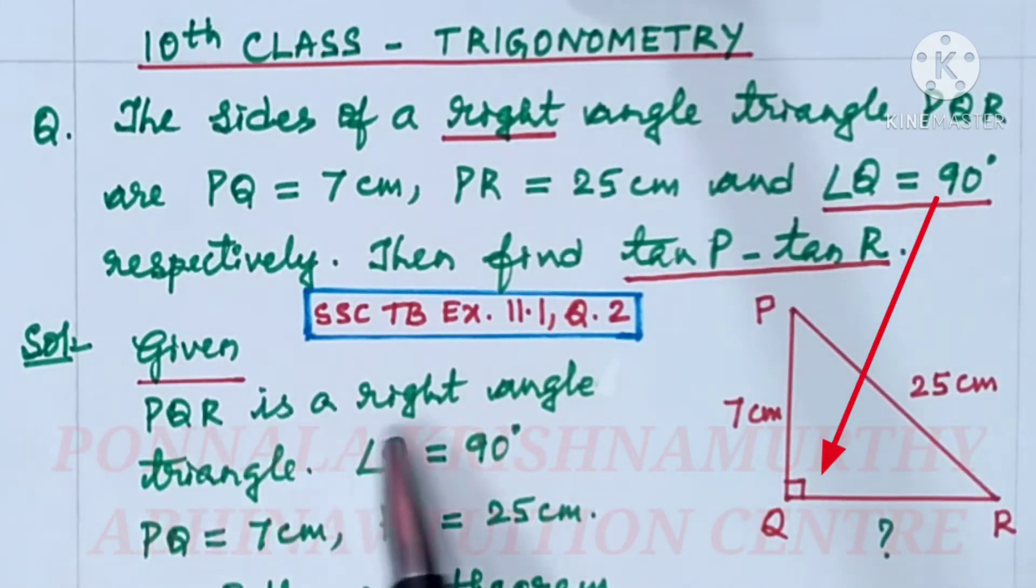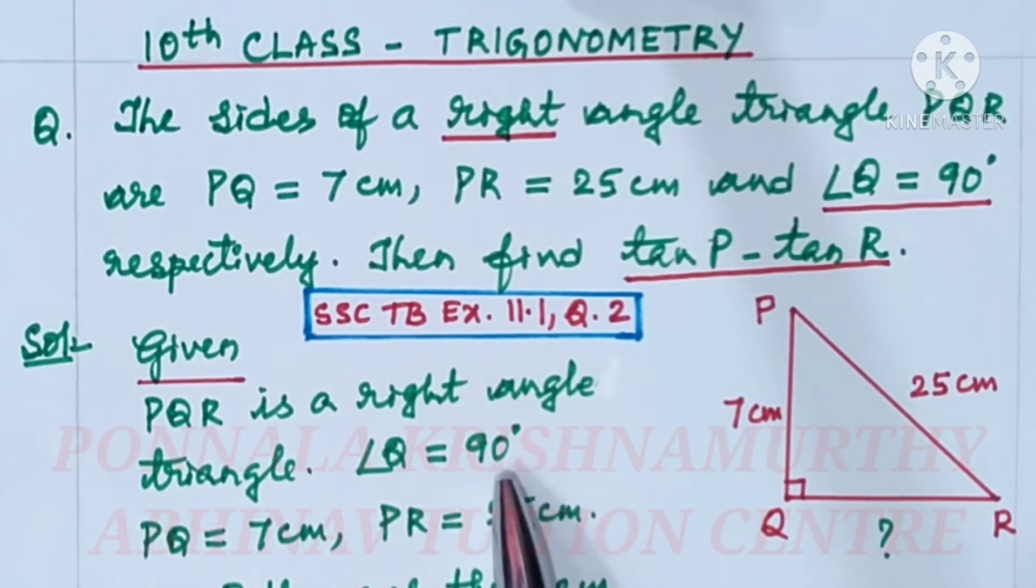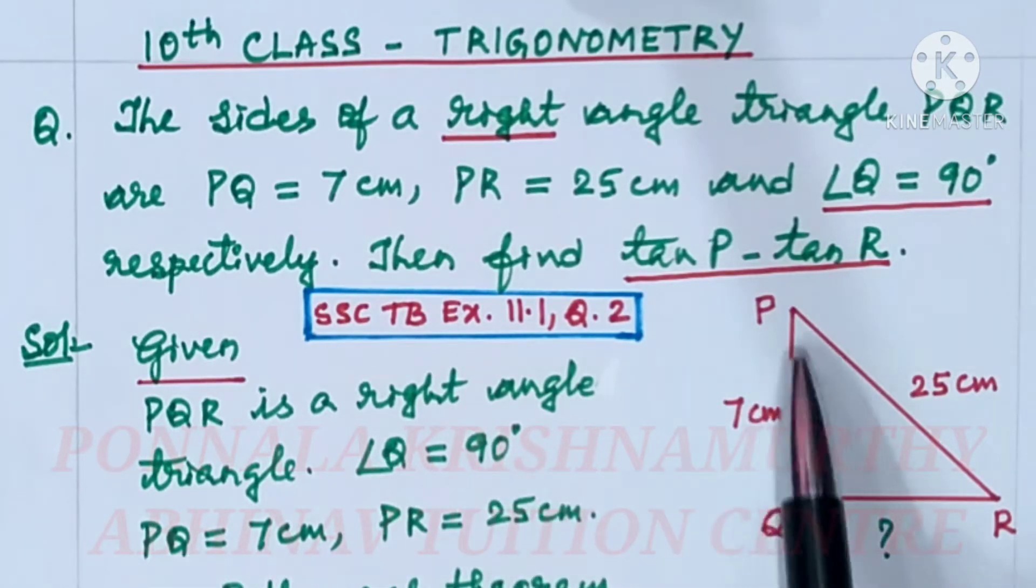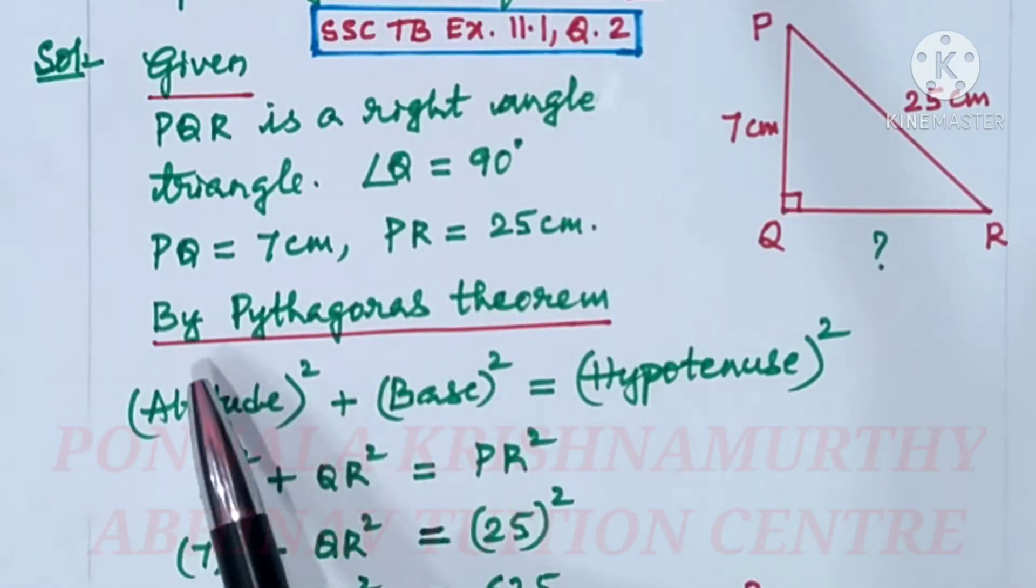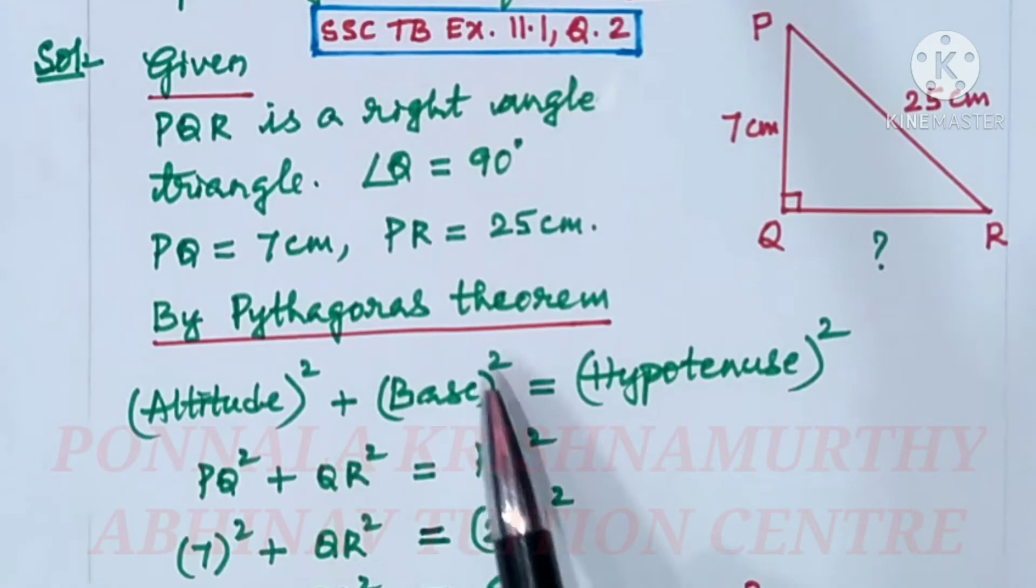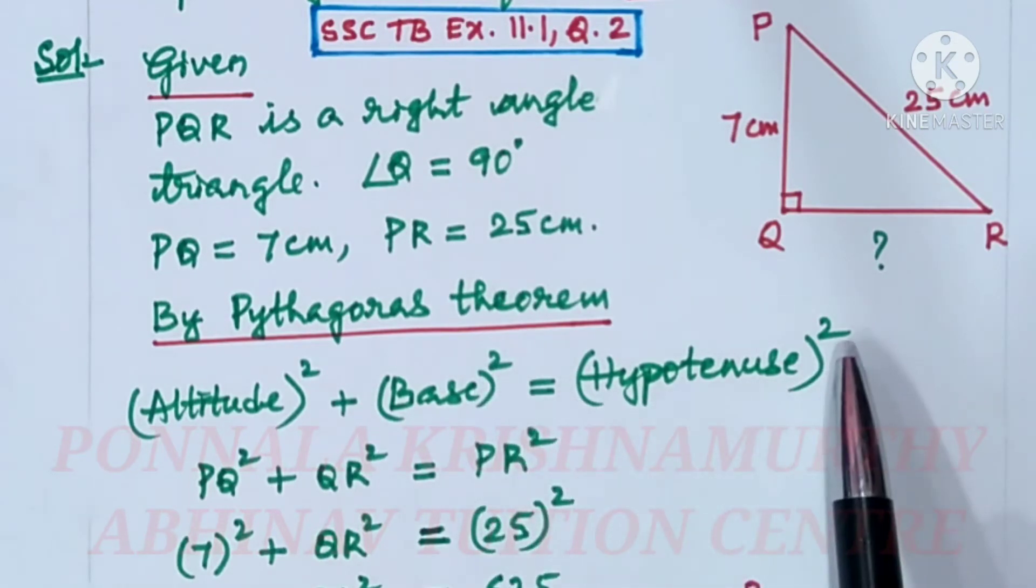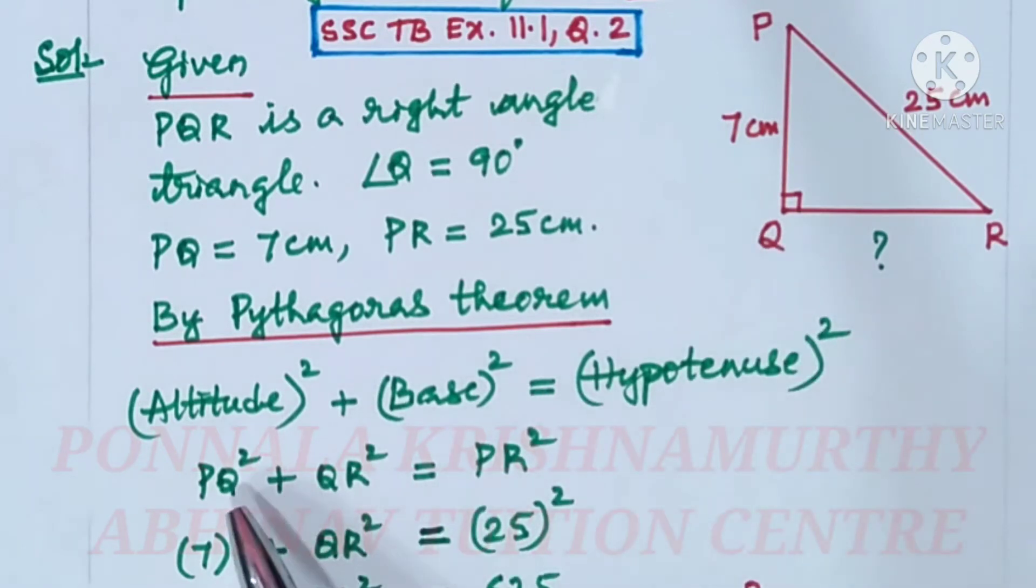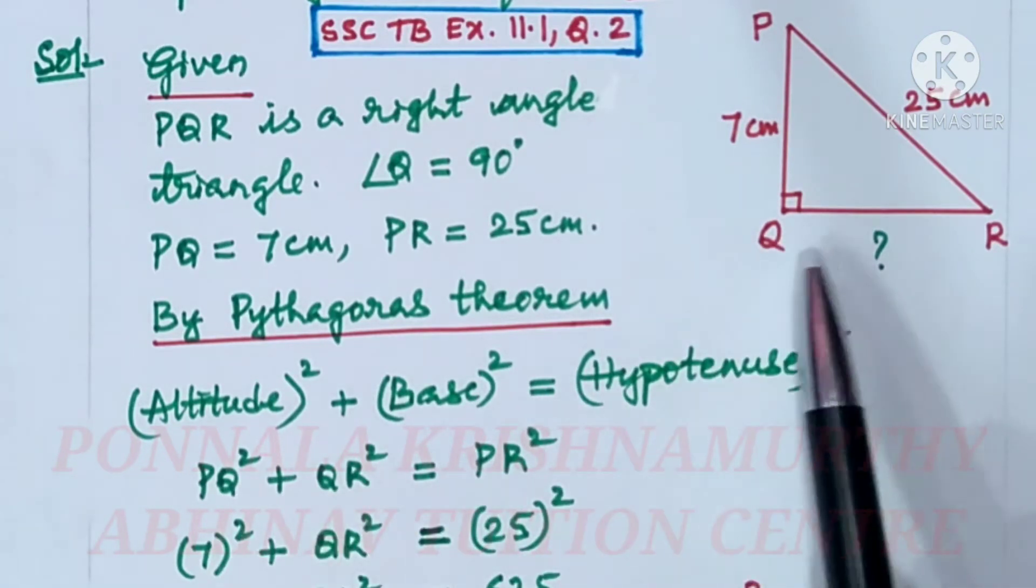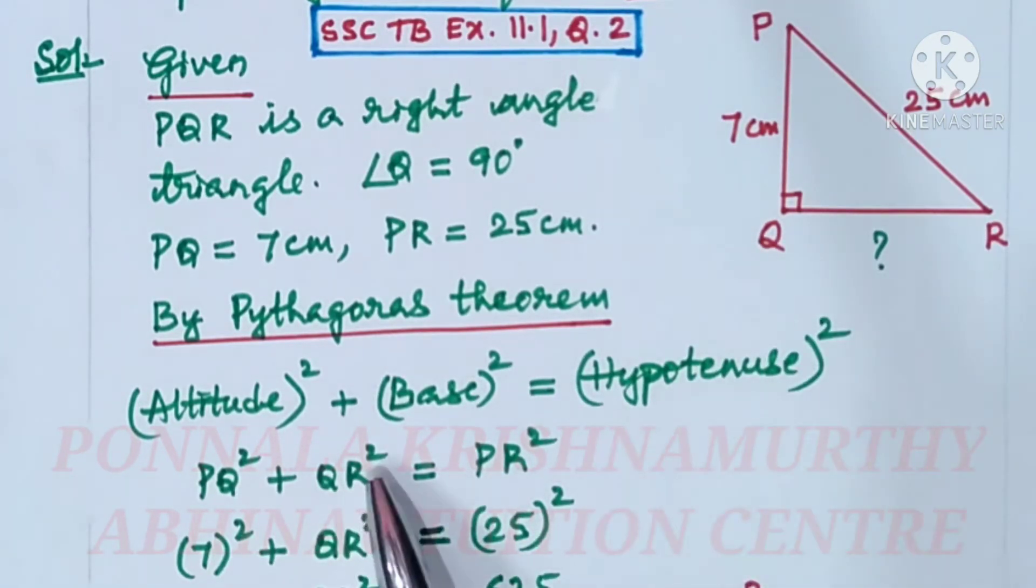Given PQR is a right angle triangle, angle Q equal to 90 degrees, PQ equal to 7 centimeters, PR equal to 25 centimeters. By Pythagoras theorem, altitude squared plus base squared is equal to hypotenuse squared. PQ squared plus QR squared is equal to PR squared.